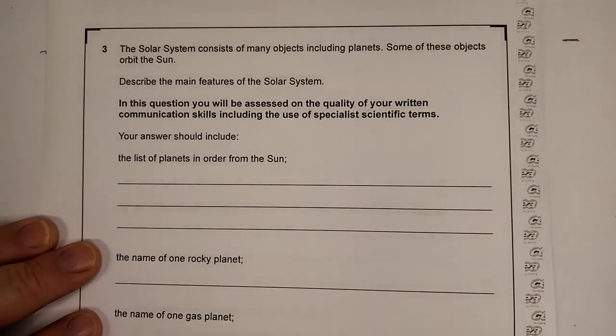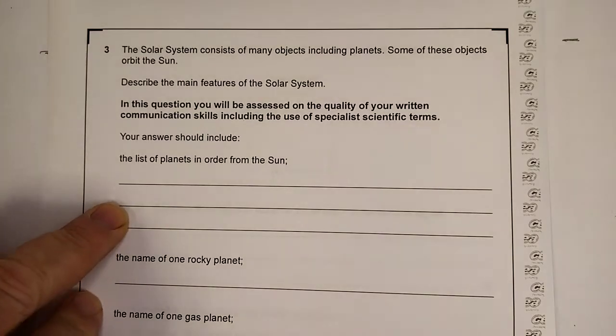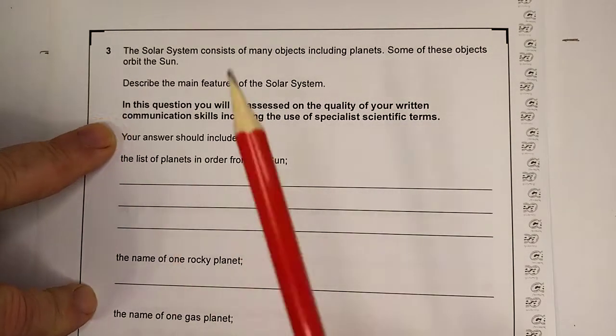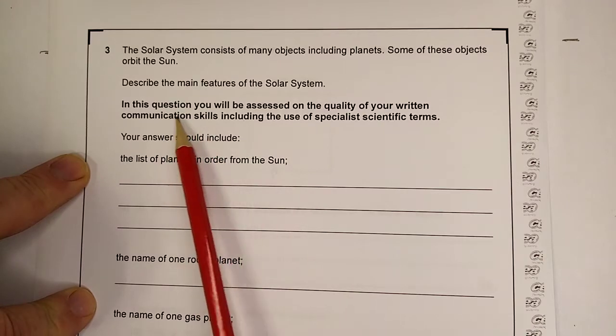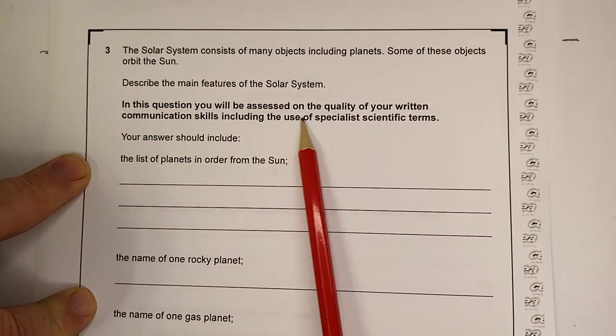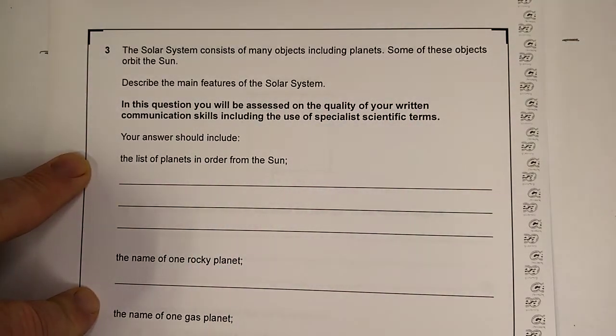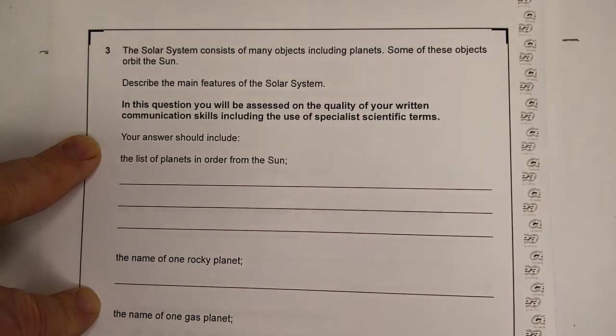Let's have a look at question number 3. The solar system consists of many objects, including planets. Some of these objects orbit around the sun. Describe the main features of the solar system. In this question, now again this is in bold text so you should be paying attention to this, you'll be assessing the quality of your written communication. So it has to be given letters, it has to be a full step, it has to be a meaningful sentence, and it has to have the correct spelling. There are more or less two marks for that.